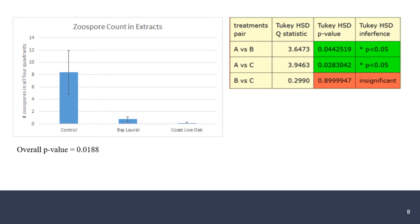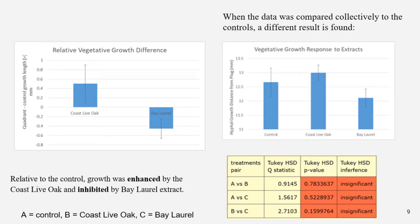When we looked at normal zoospores present in solution, we again found that the tannins are very effective at eliminating zoospores. This was a little counterintuitive, especially given our hypothesis.